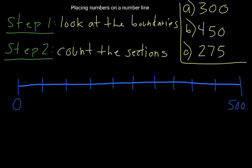That's step 1, we've looked at the boundaries. Step 2: count the sections. That means you need to count the number of sections that the number line is cut up into, and that'll tell you what the steps are for each section, in other words what each section is worth.